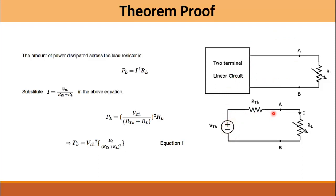A and B are the terminals across which the load resistance is connected and across which the power absorbed by the load is measured. So P_L is equal to I² × R_L.